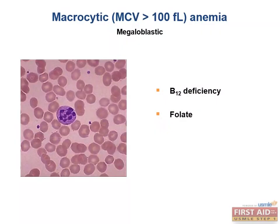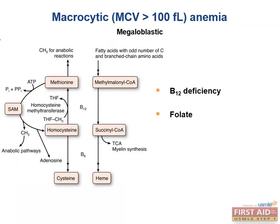Importantly, however, vitamin B12 deficiency will have additional neurologic symptoms secondary to methylmalonic acid buildup. Symptoms such as paresthesias, dementia, impaired proprioception, spasticity, and ataxia may be noted.